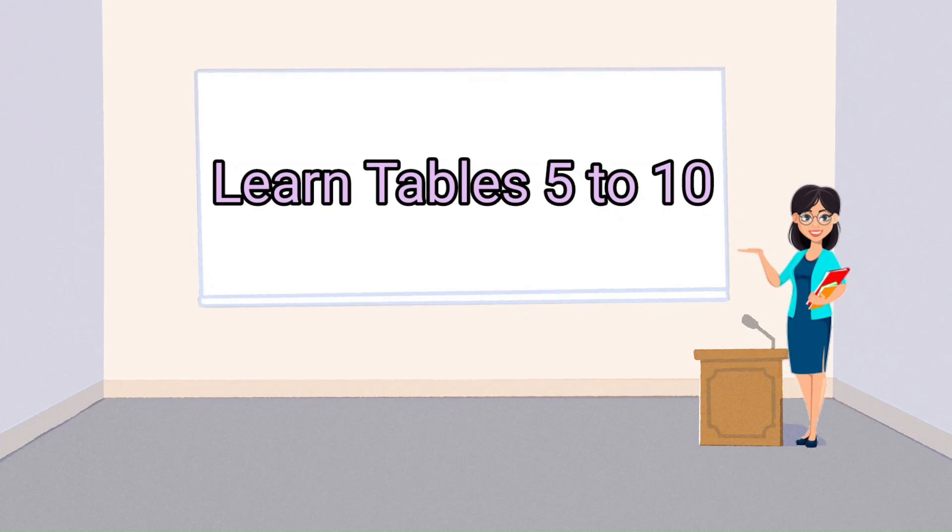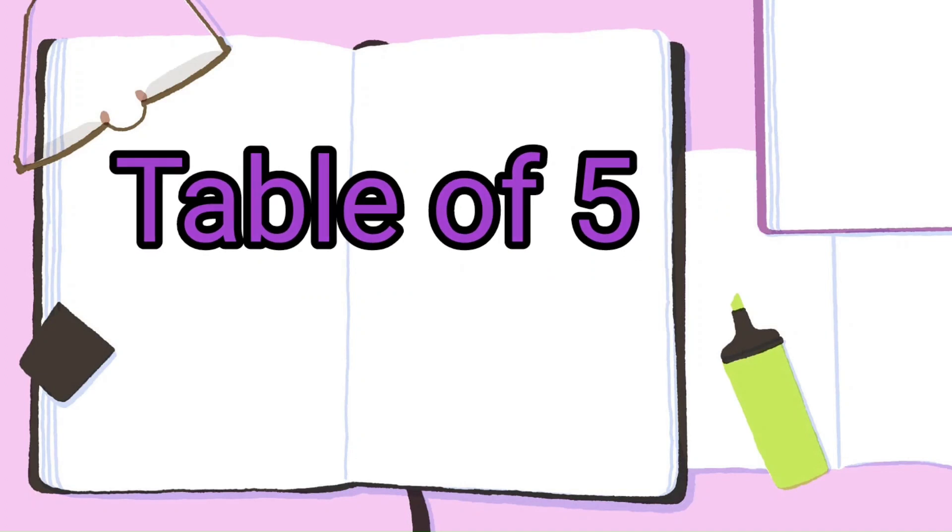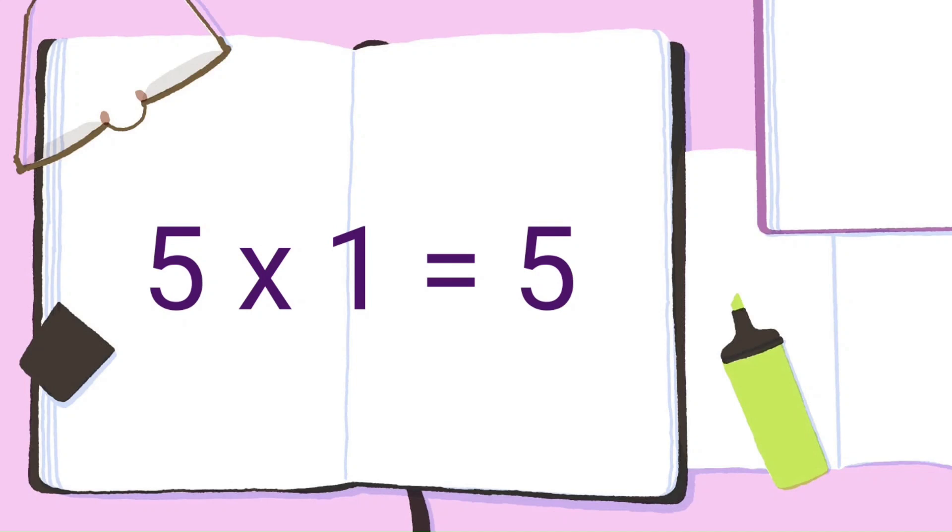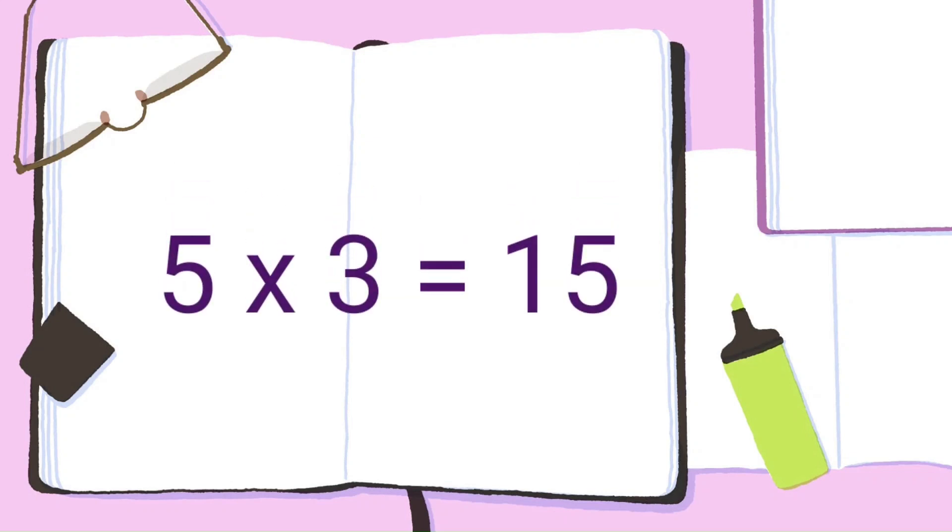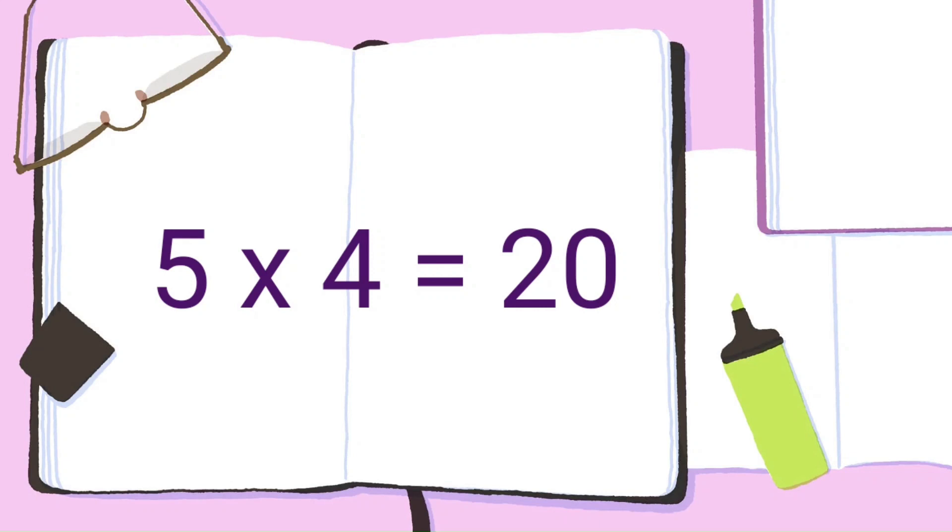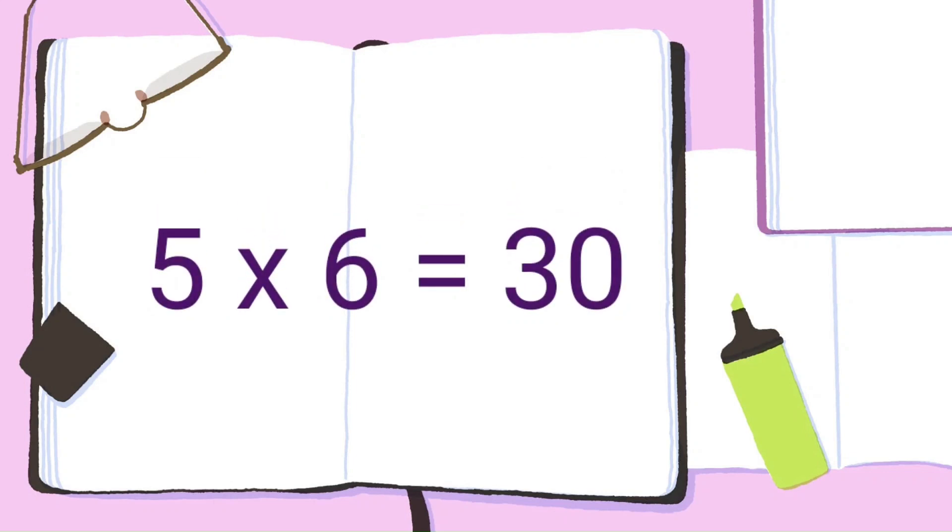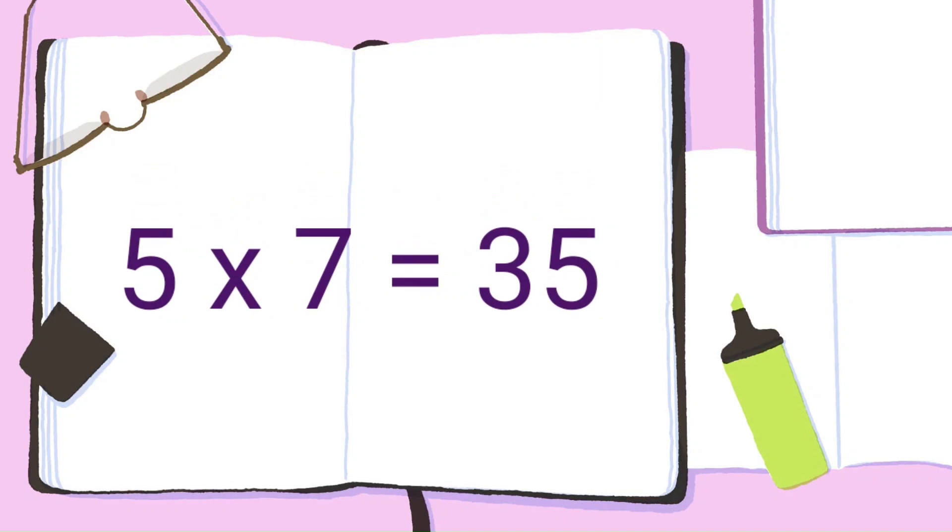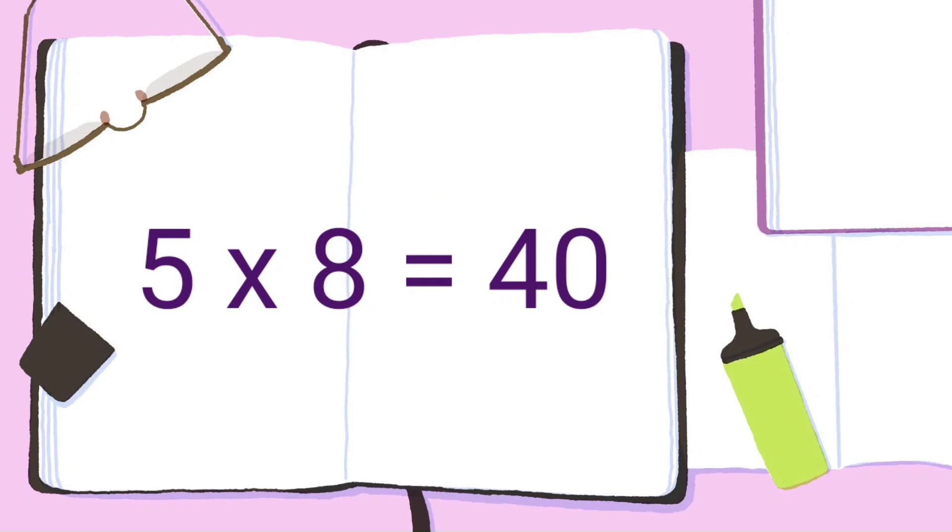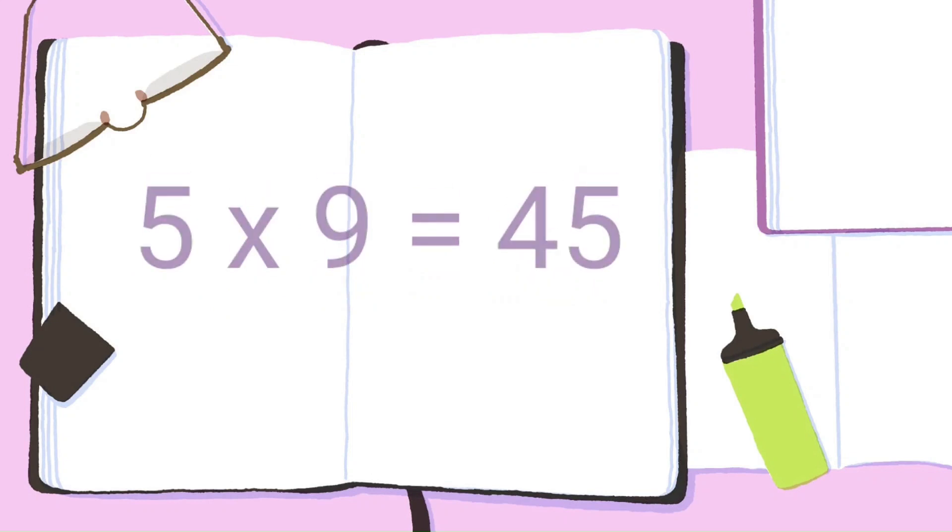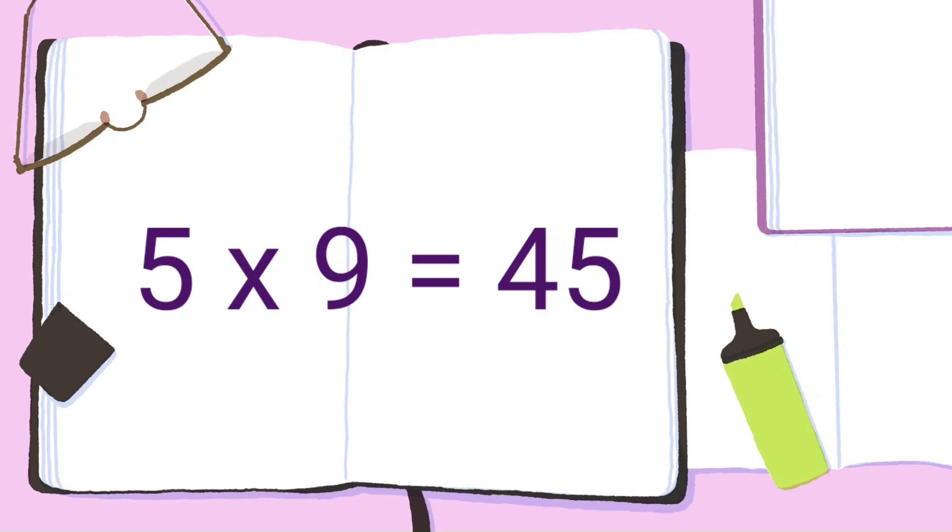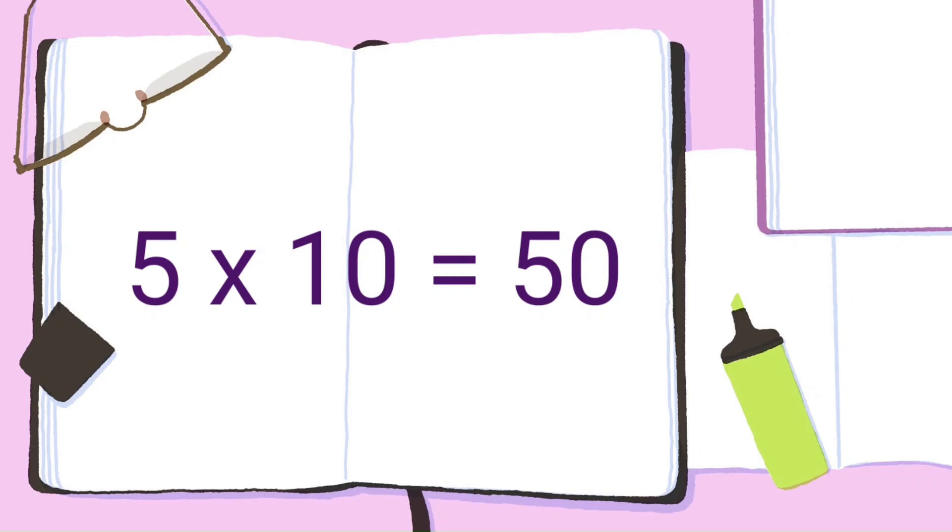Hello kids, today we are going to learn tables from 5 to 10. So let's start with the table of 5. 5 ones are 5, 5 twos are 10, 5 threes are 15, 5 fours are 20, 5 fives are 25, 5 sixes are 30, 5 sevens are 35, 5 eights are 40, 5 nines are 45, 5 tens are 50.